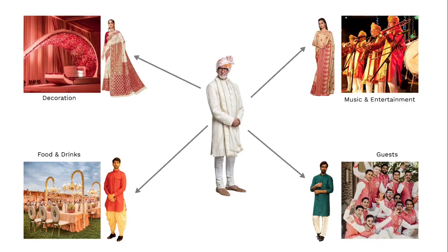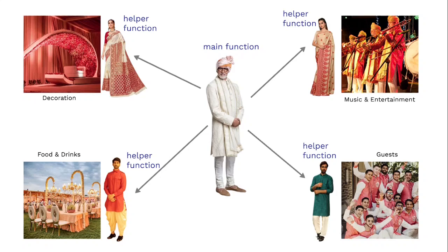We have a big program, and if we keep writing the entire program in our main function — which is our organizer in this case — it's going to be a mess and may create confusion for programmers. So instead, we distribute our big program into smaller chunks, take help of different helper functions, and allocate each particular logic to a particular function. Whenever we need that logic or want to execute that piece of code, we call that function and it will do the entire work and give us the results.